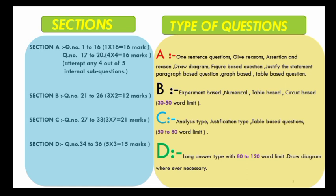Section D consists of long-answer type questions where the word limit is 80 to 120 words. One very important thing CBSE has already mentioned is that in Section D, if necessary, you have to draw diagrams because they are five-mark questions. Whenever you find it necessary — especially for topics like flowers, or functions of some part — you have to draw the diagram and explain the concept properly.